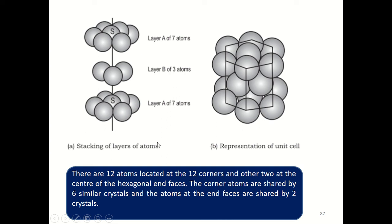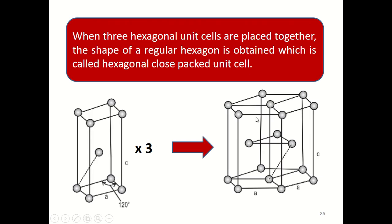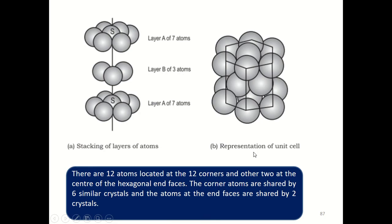Twelve atoms are located at the twelve corners. In addition, there are two atoms at the center of the hexagonal end faces — one atom at each face center, marked as S. Now this important point: the corner atoms are shared by six similar hexagonal unit cells, and the atoms at the end faces are shared by two crystals. You must remember this, as it is required for the further derivations.